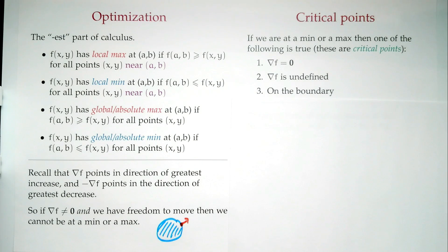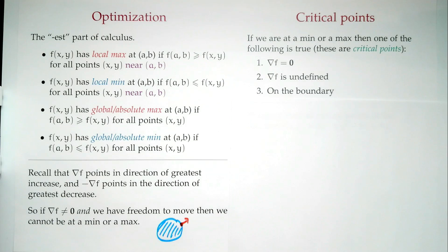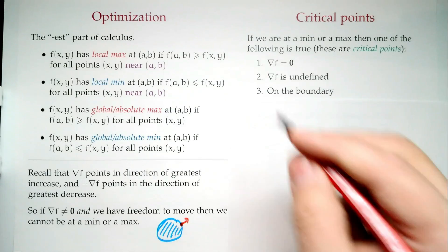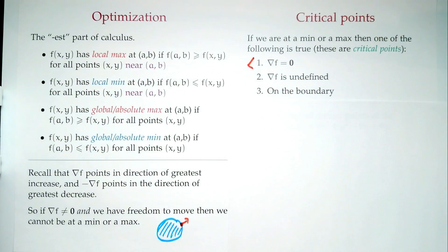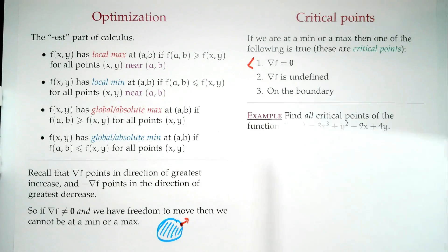Technically the book calls critical points just gradient-zero or gradient-undefined, but I like to include the boundary too. So we need to be at a place where the gradient is either zero, undefined, or we need to be at the boundary. Most of our work will focus on when the gradient is zero; we'll deal with the boundary in the next lecture.